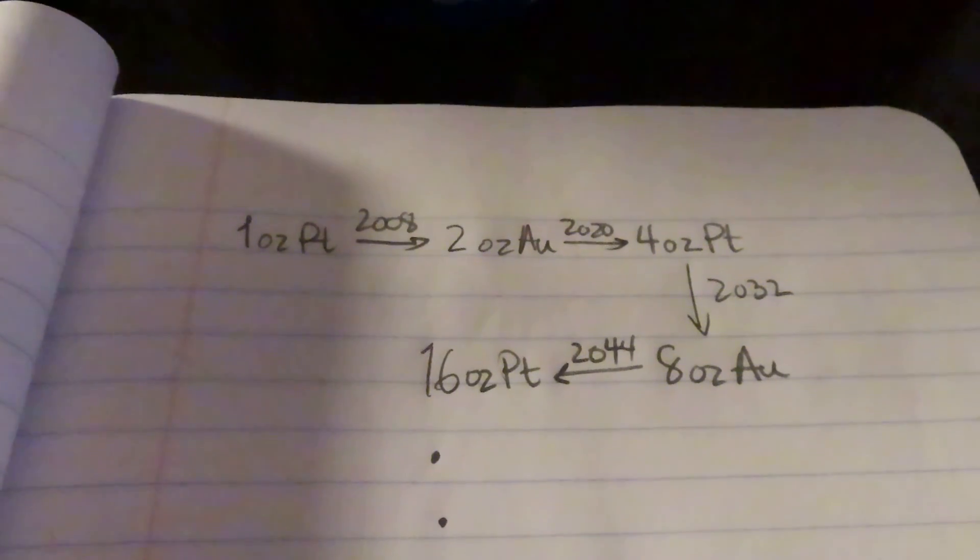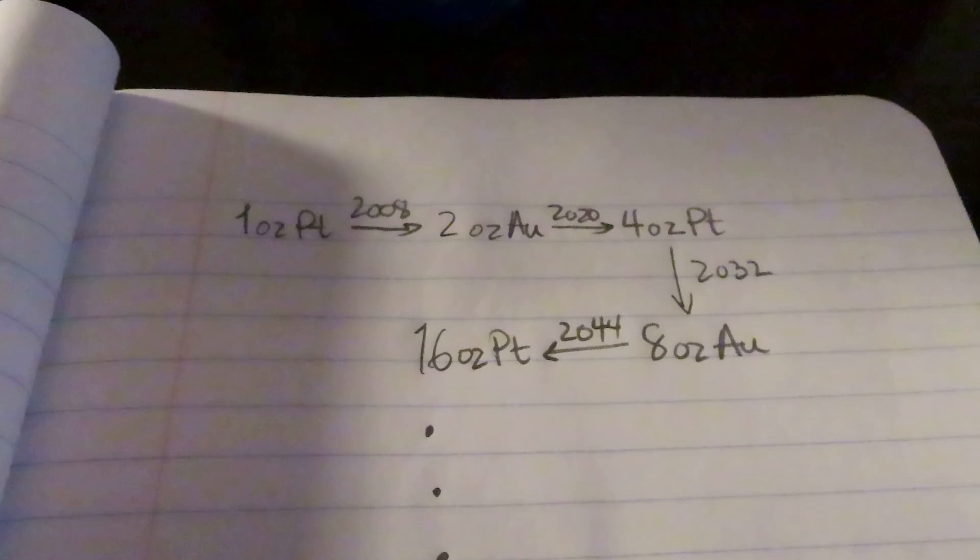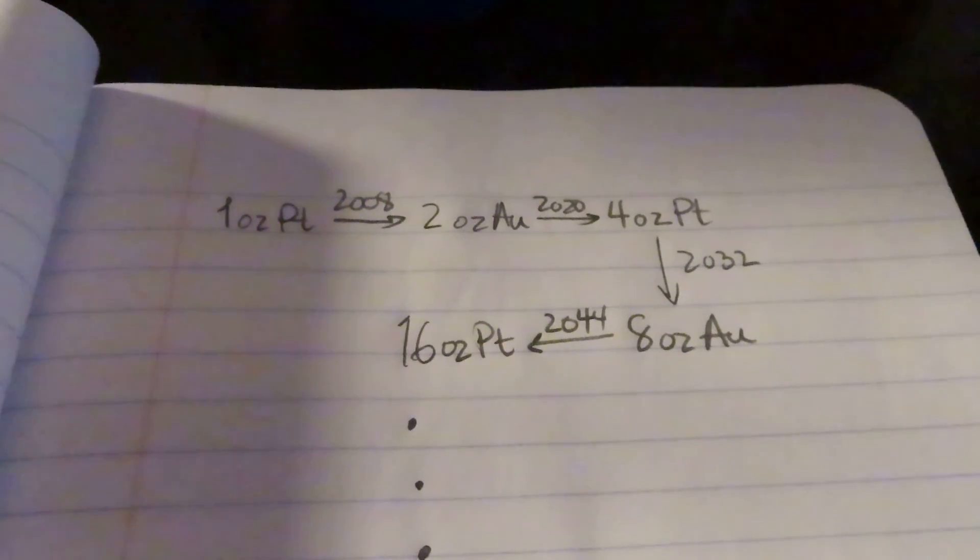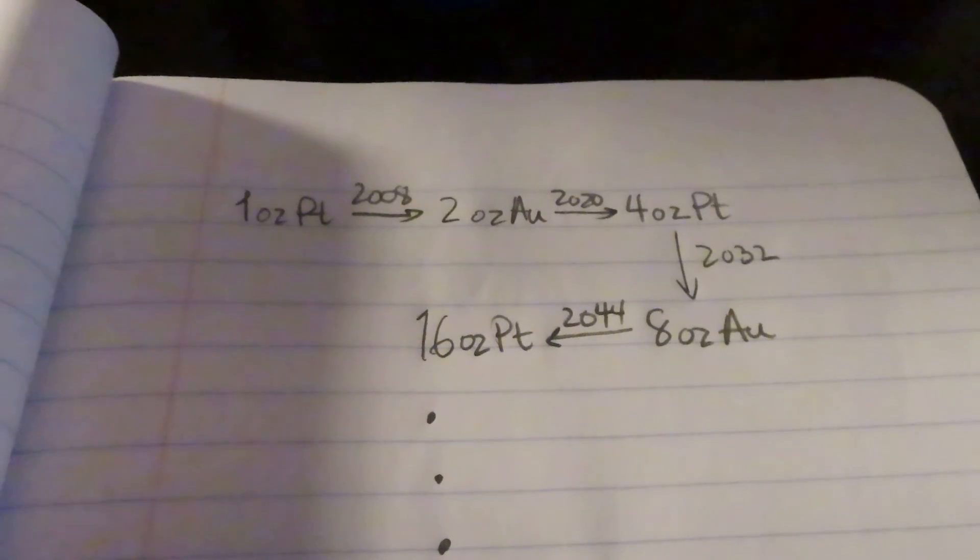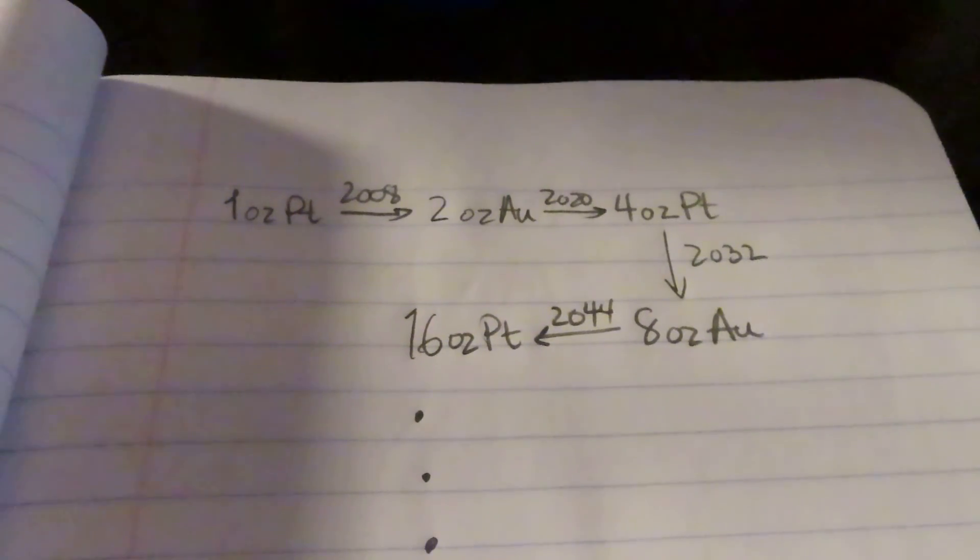So if we continue doing that, every time gold is half of platinum, we trade platinum for gold. And every time platinum is half of gold, we do vice versa. And we assume that it takes about 12 years for that ratio to revert every time.